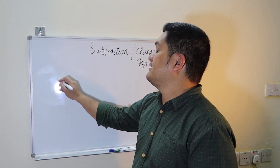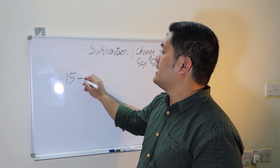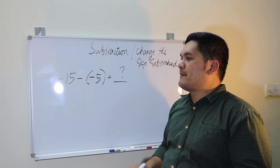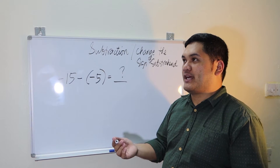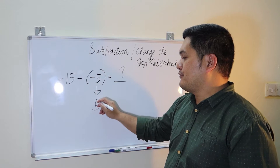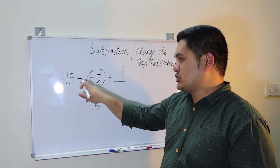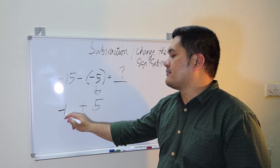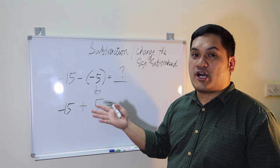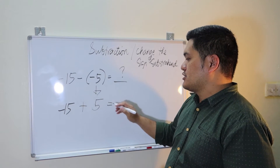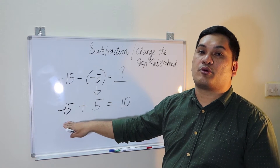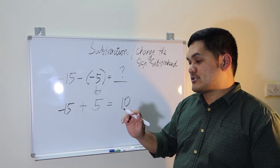Another example: negative 15 minus negative 5. Change the sign of the subtrahend — negative 5 becomes positive 5 — then proceed to addition: negative 15 plus positive 5. These have different signs, so subtract the smaller number from the bigger number: 15 minus 5 equals 10. Follow the sign of the greatest number, which is negative 15. So the answer is negative 10.